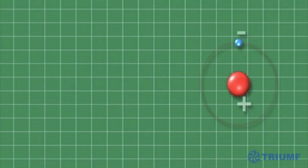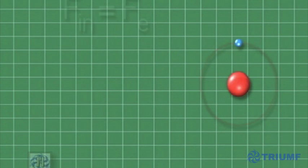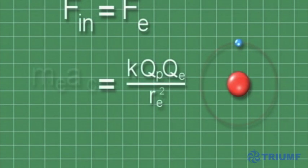Opposite charges attract and the resulting inward force creates a centripetal acceleration which keeps the electron in its orbit. Combining our knowledge of the Coulomb force and the centripetal acceleration, we can calculate the electron's velocity.